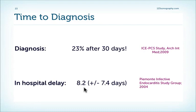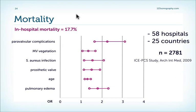The key message is: think about endocarditis, suspect endocarditis, and refer the patient to echocardiography as early as possible. The mortality of endocarditis depends on many factors. Patients who have paravalvular complications, staph infection, and signs of pulmonary congestion such as pulmonary edema have a worse prognosis. This is also true for patients who have mitral valve vegetations, prosthetic valves, and who are older.